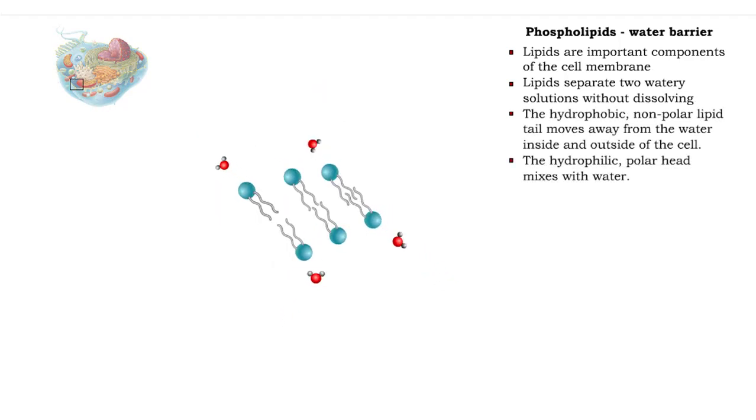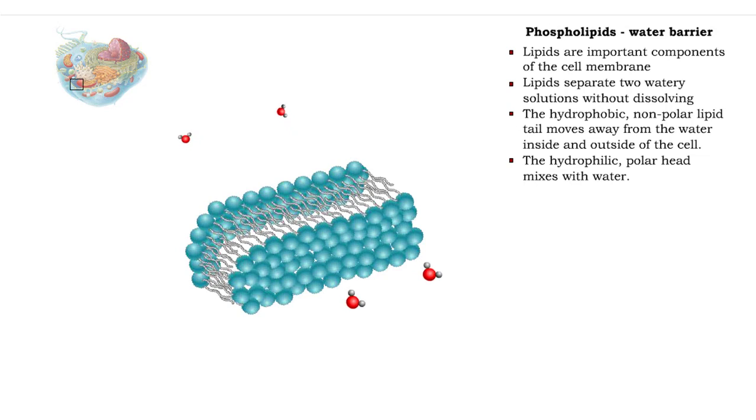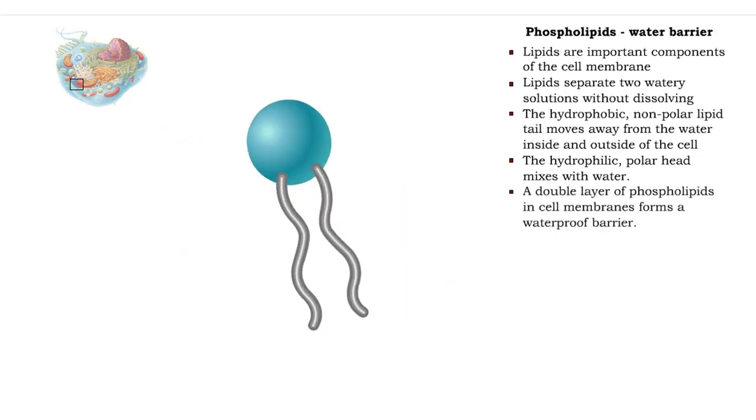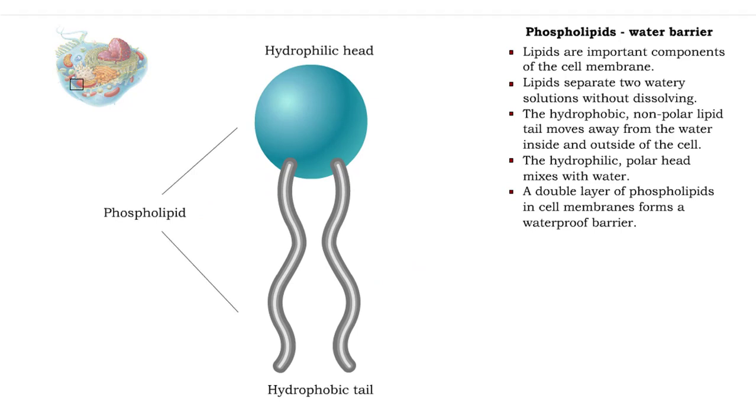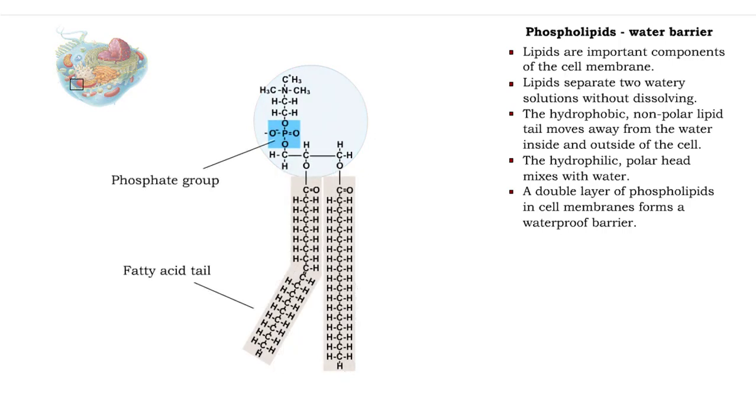Phospholipids have nonpolar tails made up of fatty acids. The head of the molecule is made up of a polar or charged phosphate group. Because the head is polar, it mixes with water. It is hydrophilic, or water-loving.